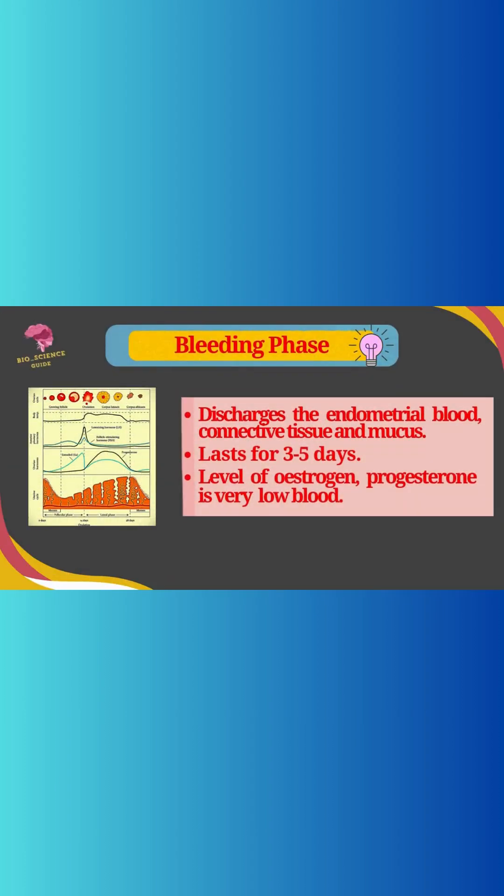In the menstrual phase or bleeding phase, the endometrial blood, connective tissue, and mucus are discharged through the vaginal orifice. This phase lasts for three to five days, and the levels of estrogen and progesterone are very low in the blood.